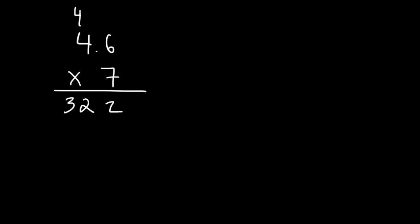Now notice that we have one number to the right of a decimal point. So therefore, in our answer, we should have one number to the right of a decimal point. So the answer is 32.2.